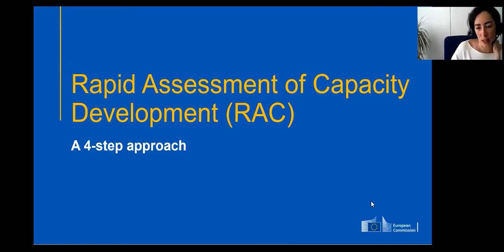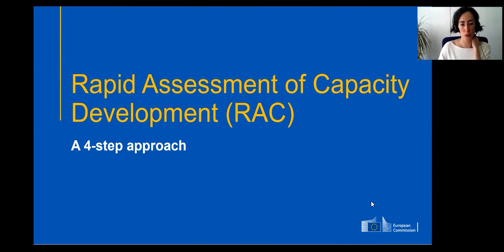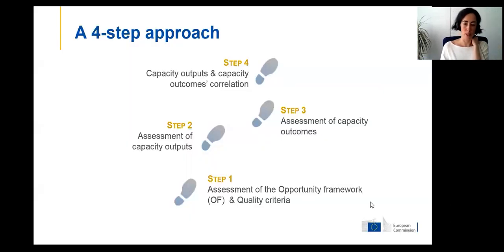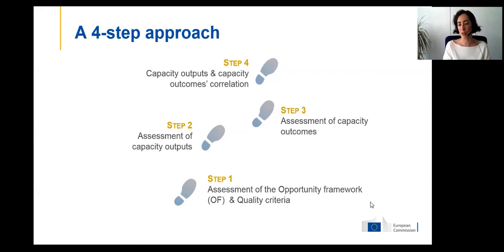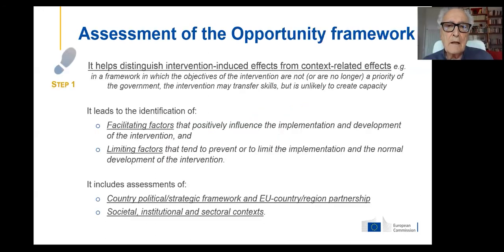The second part is an introduction to the four steps. Step one, covered by Enzo, is on the assessment of the opportunity framework and quality criteria on the design of the intervention. The second is on the assessment of capacity outputs, the third on outcomes, and the fourth on the actual correlation between capacity outputs and outcomes.